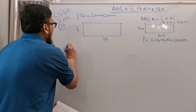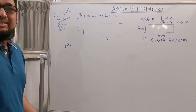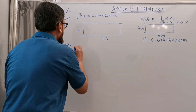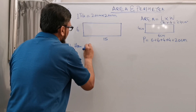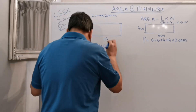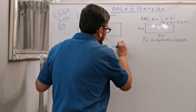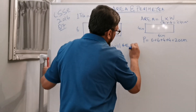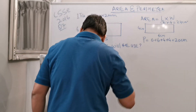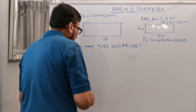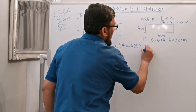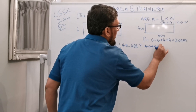Part A is asking: how many tiles will he use for making the worktop? Give your answer in meter — the answer will be a number of tiles.